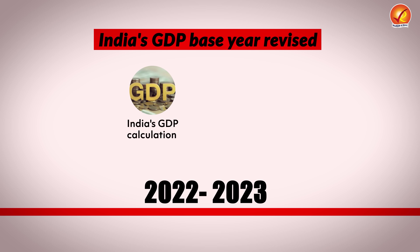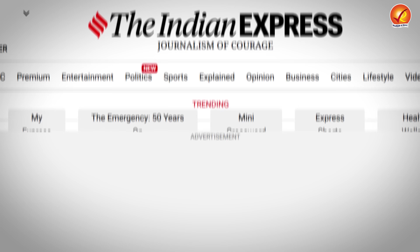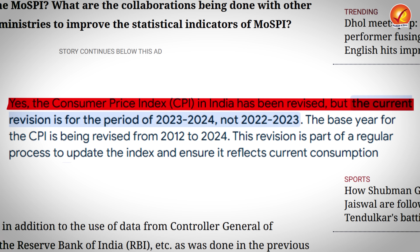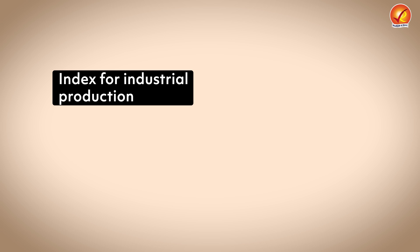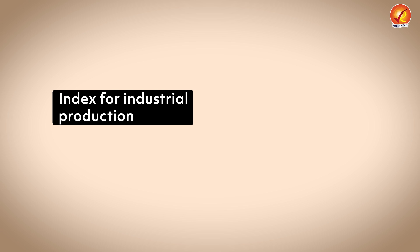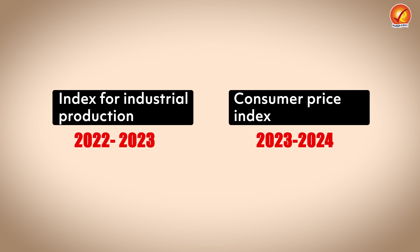This revision is not just for India's GDP calculation, but also for the Index of Industrial Production — the base year for that has also been revised to 2022-2023. However, the base year for the Consumer Price Index has been revised as well, but it is not 2022-2023; it is 2023-2024. So for GDP and IIP the base year will be 2022-2023, while for CPI it will be one year later, that is 2023-2024.